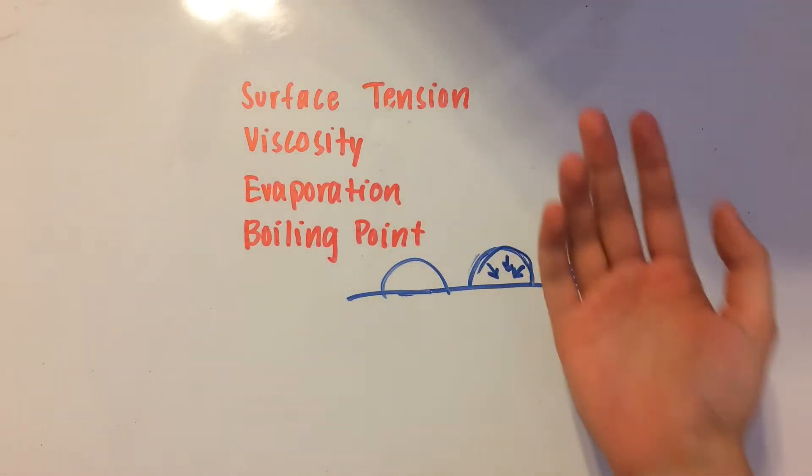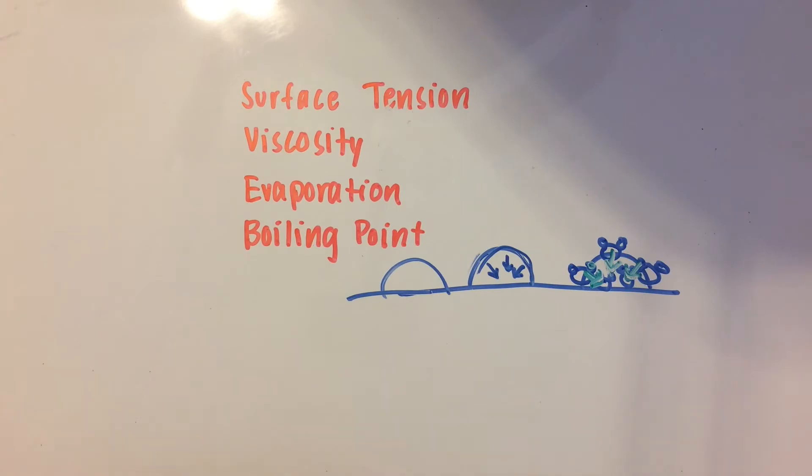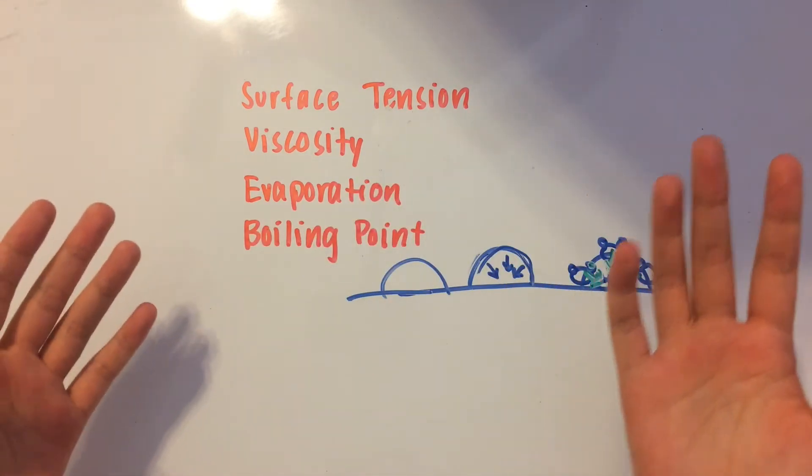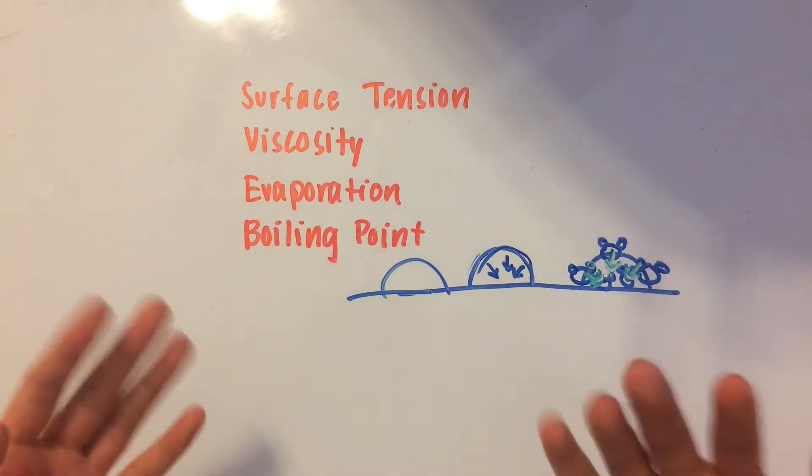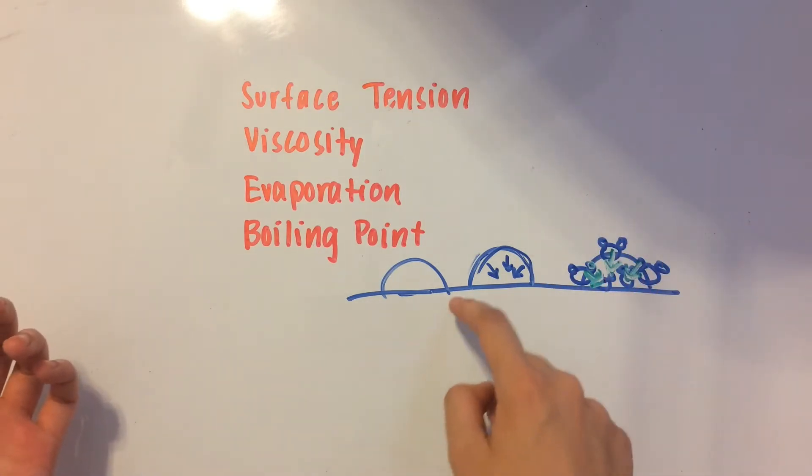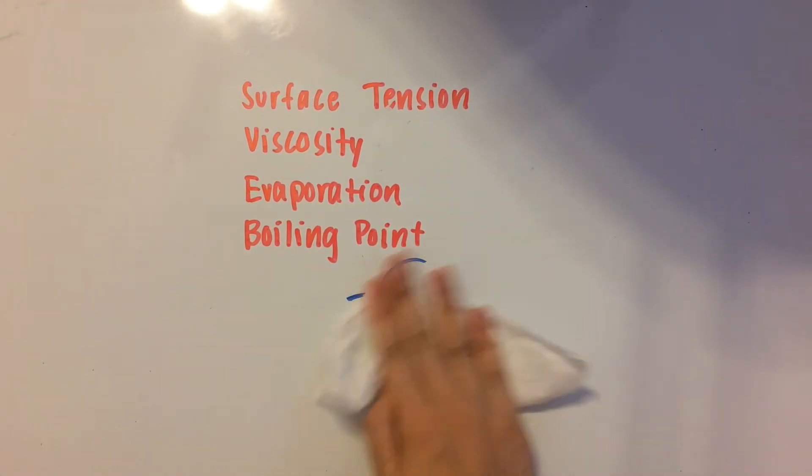Surface tension is really the attractive forces between the outermost level molecules and the inner ones, and that's going to pull the outer ones in until the surface area is minimized.